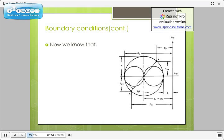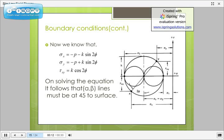Now, from Mohr circle, we know that sigma x equals minus p minus k sin 2 phi and sigma y equals minus p plus k sin 2 phi and tau xy equals k cos 2 phi. Now, from the above given boundary conditions, sigma y equals zero and tau xy equals zero. Now, if we put tau xy equals zero in third equation, we get phi equals plus minus 45 degrees.